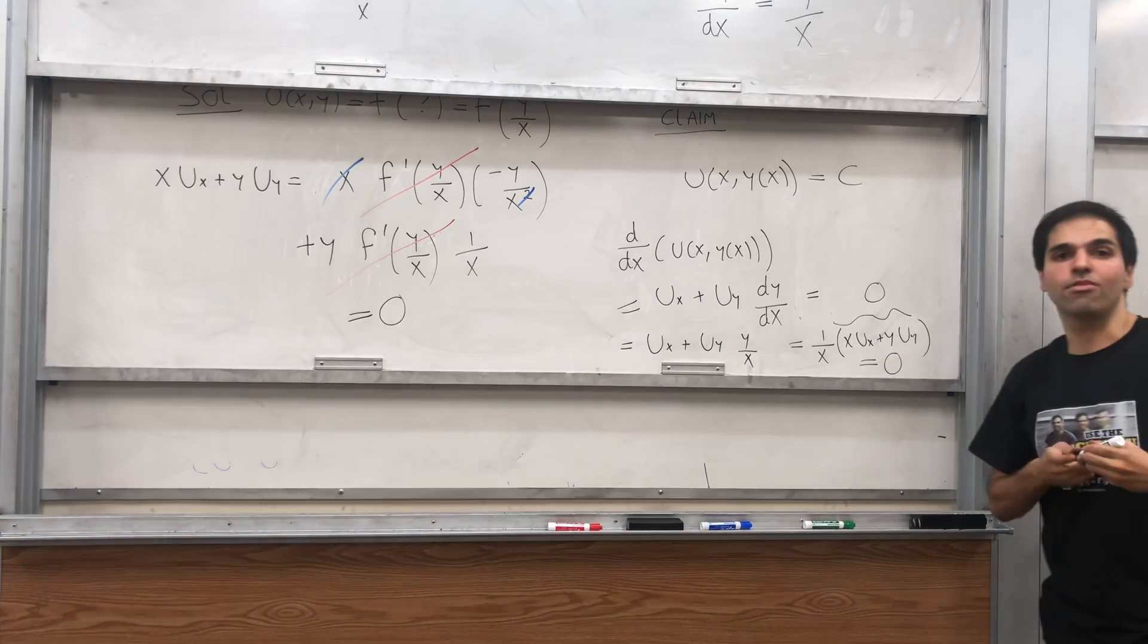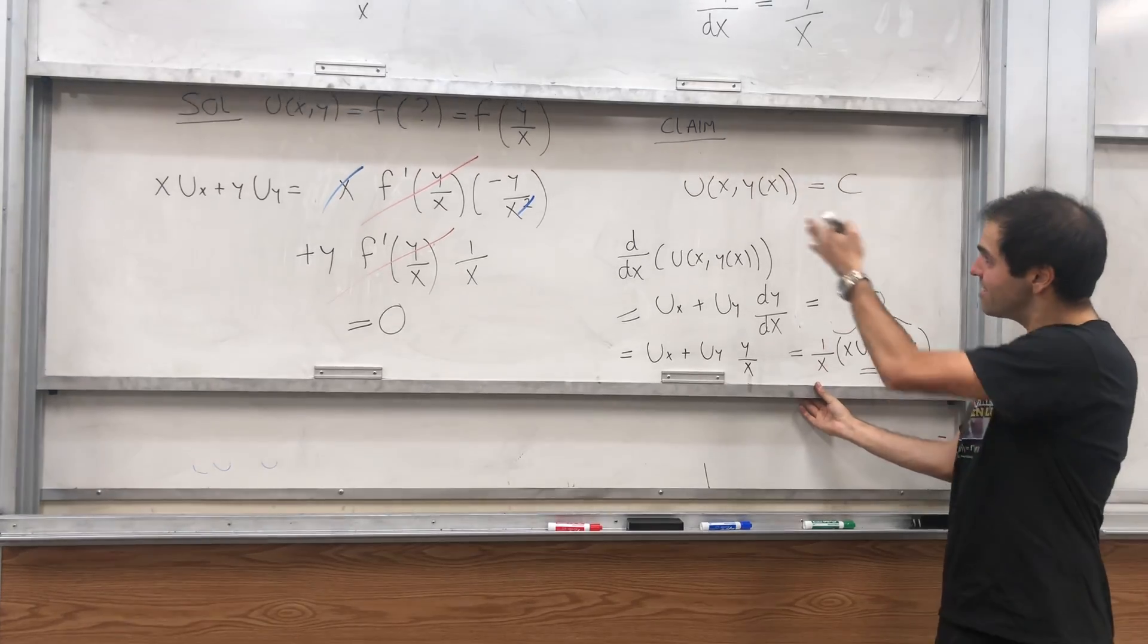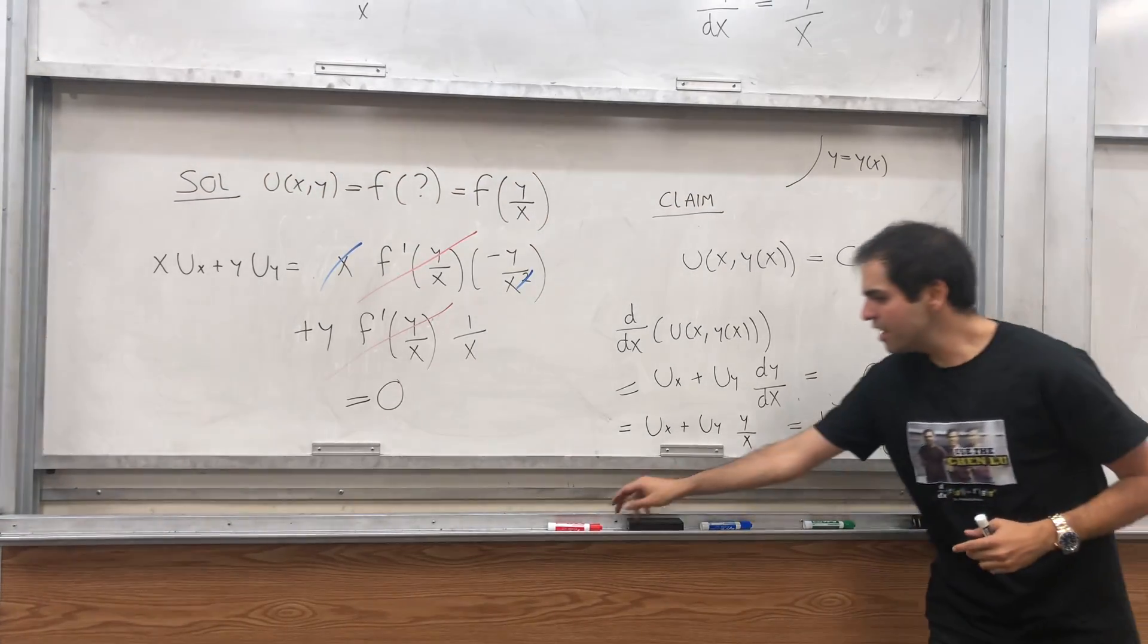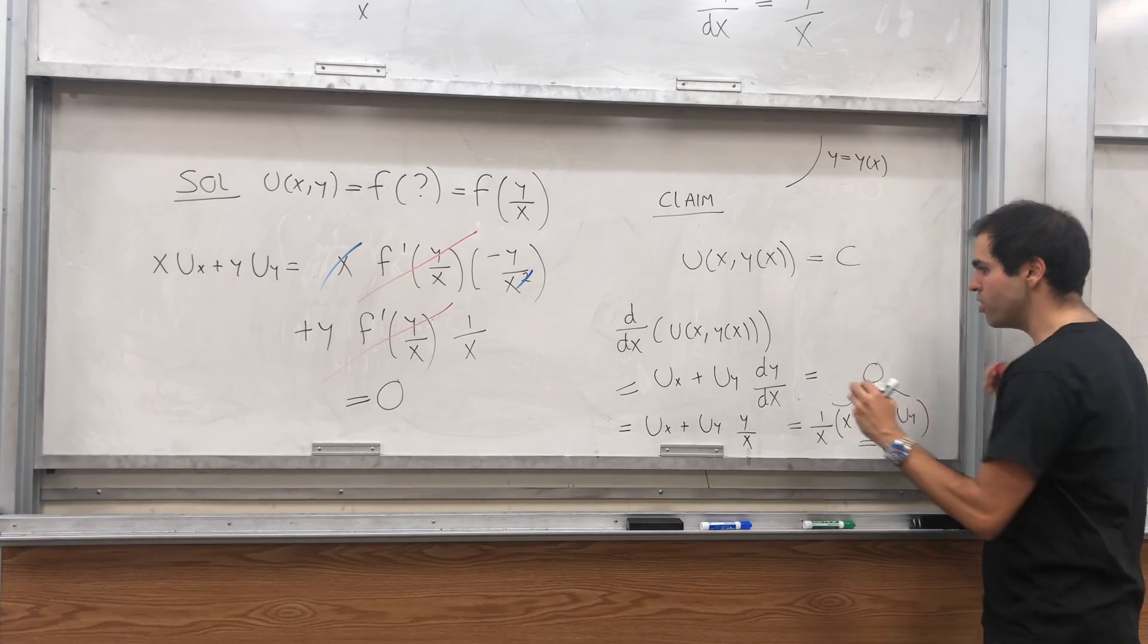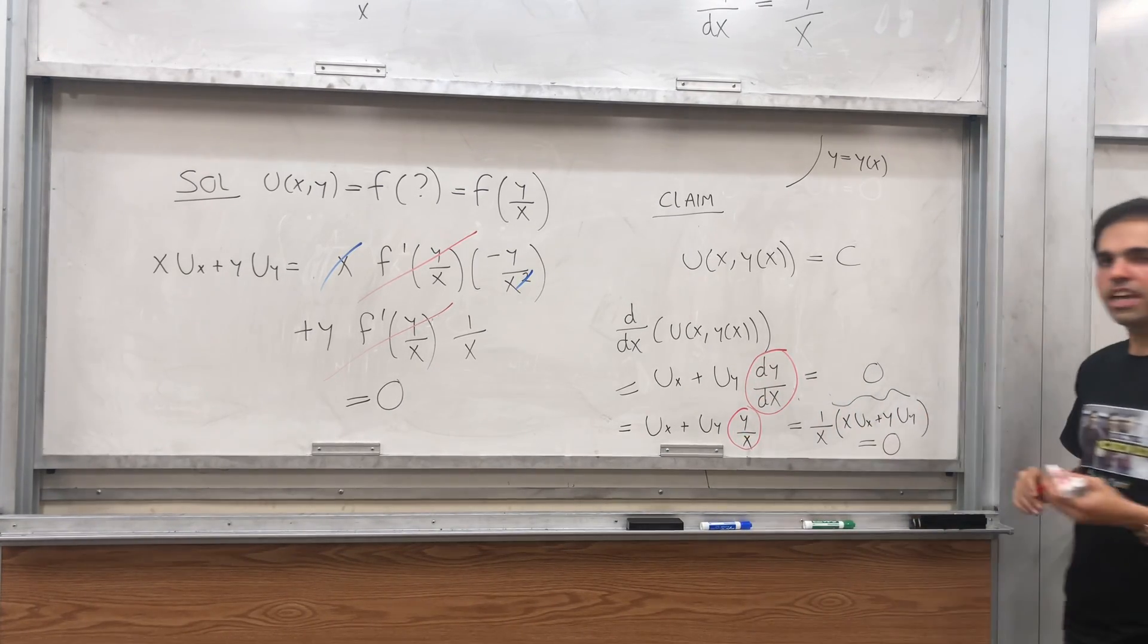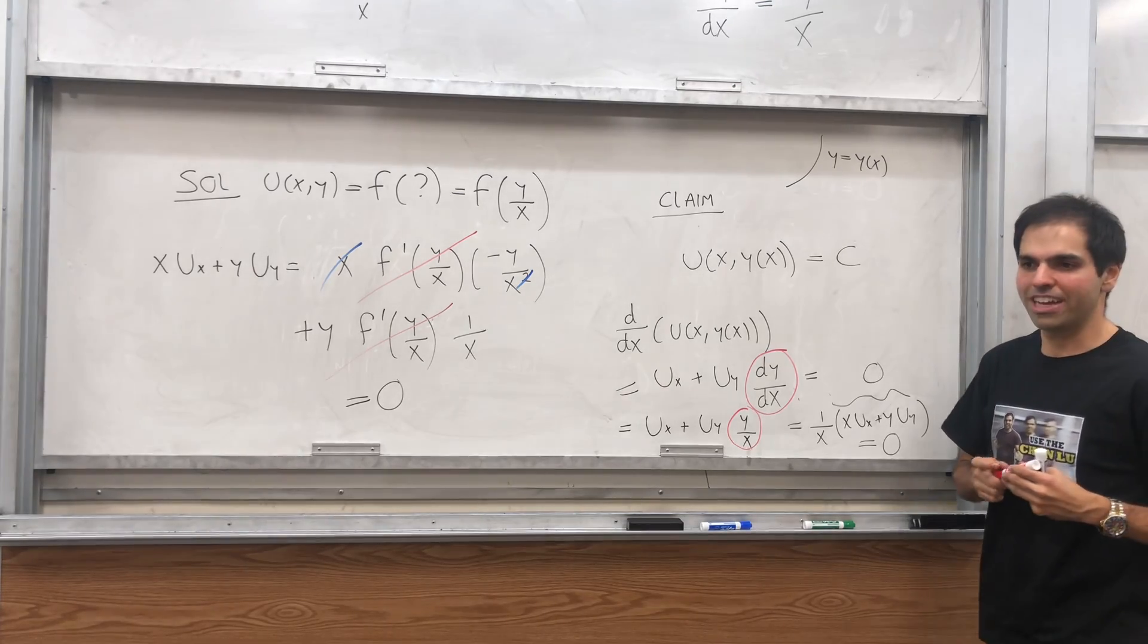So indeed, wishful thinking isn't that wishful, after all. It actually makes sense that u is constant of the curves. And again, the real thing that made this work is this thing that we assumed dy over dx is the same as the slope of our vectors.